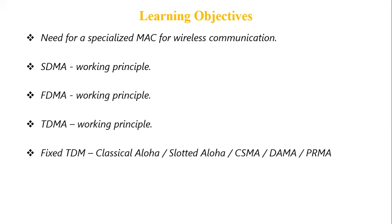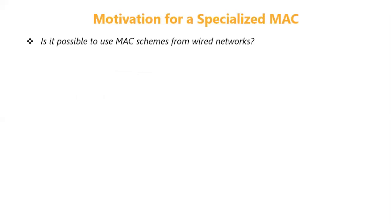Let us start with the motivation for a specialized MAC — why we need one in wireless networks. First, let us consider whether it is possible to use the existing MAC from wired networks in wireless networks. In wired networks, the commonly used MAC in IEEE 802.3 is CSMA/CD — carrier sense multiple access with collision detection. If a sender wants to send something, the sender will sense the medium to check whether it is free or not.